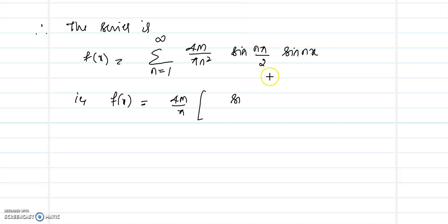We can make sin π by 2 is 1, and then sin x square when n is equal to 2, sin by 0, and n is 3 minus sin 3x by 9 square, sin 3π by 2 is minus 1.